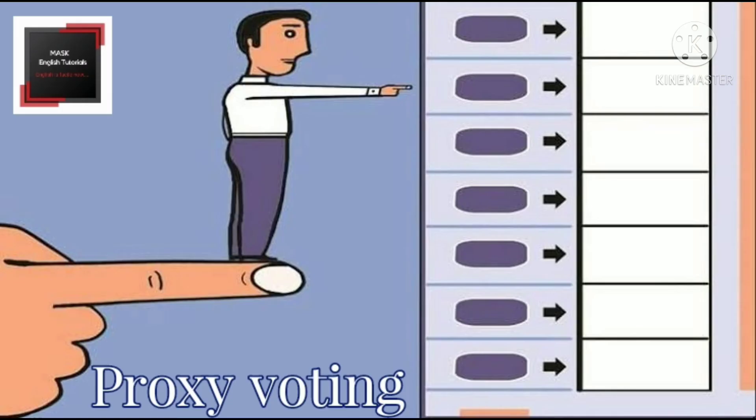Number 26. Proxy voting. Proxy voting is a form of voting in which a person appoints a representative or an agent to vote instead of him or her.